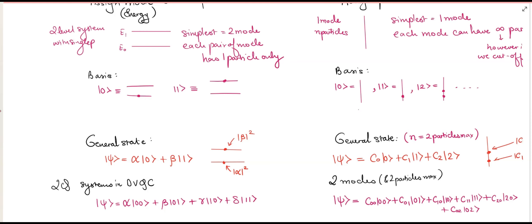In the Fock space basis, |1⟩ represents one particle in that particular mode, |2⟩ represents two particles in that mode, and so on. There is theoretically no limit — there can be infinite particles in a single mode. In practice, when we do computations, we consider some cutoff and say there are n particles as the capacity of a particular mode.